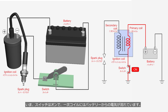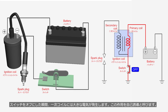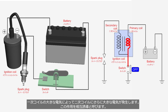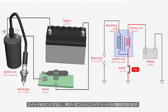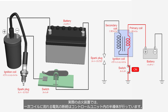When the switch is turned on, electricity flows from the battery through the primary coil. The moment the switch is turned off, a large amount of electricity is generated in the primary coil — an effect called self-induction. The large amount of electricity in the primary coil then induces an even larger amount of electricity in the secondary coil — an effect called mutual induction. The high-voltage electricity generated by mutual induction generates sparks in the spark plug. In actual ignition systems, the interruption of electrical current through the primary coil is controlled by semiconductor components within the control unit.